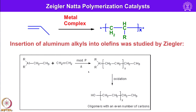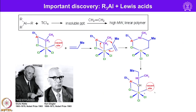Let us look into Ziegler-Natta polymerization catalysis, where aluminum alkyl plays a major role. Here an olefin and a metal complex undergo polymerization in this fashion. Insertion of aluminum alkyl into olefin was essentially studied by Ziegler. Taking a simple ethyl aluminum compound, when ethylene is added under moderate pressure on heating, the groups keep adding and then undergo oxidation to give the corresponding polymer. The trialkyl aluminum is treated with TiCl4, giving an insoluble precipitate, and adding ethylene produces a high molecular weight linear polymer.